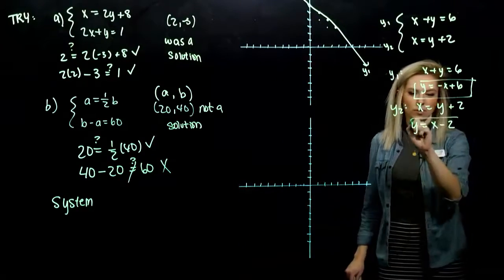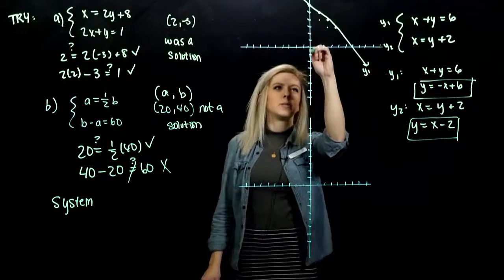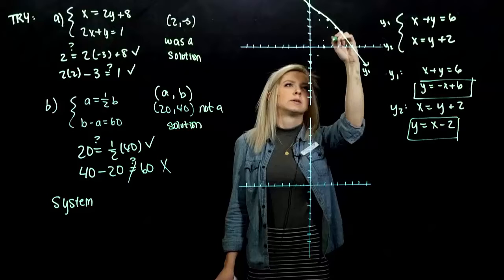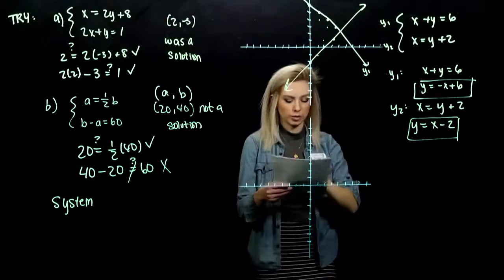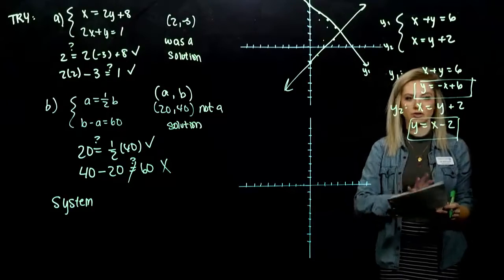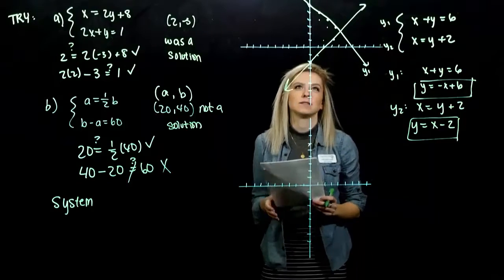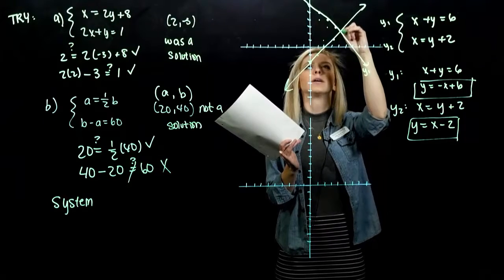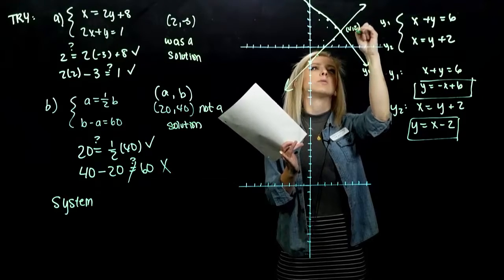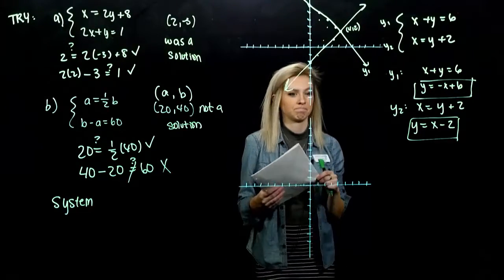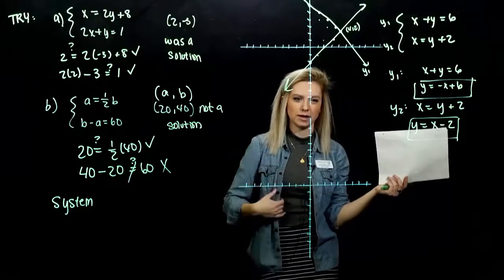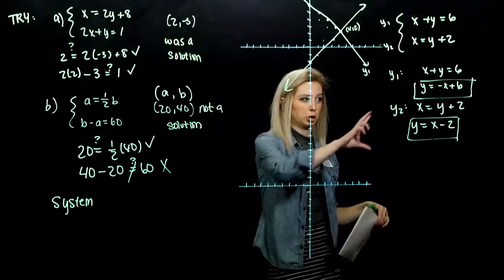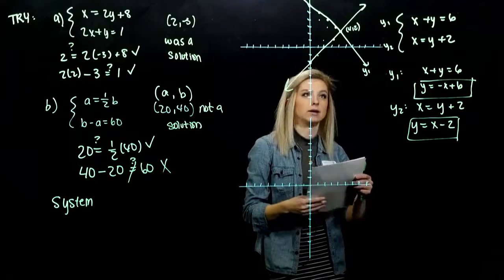And the second one, where is its y-intercept happening at? (0,-2). And from there we move according to the slope: up 1, over 1, up 1, over 1. So with your coordinate planes, the grids, get out a straight edge. We want the most accurate representation of these lines as possible. So where are they intersecting? At what point? So I'm looking at 1, 2, 3, 4, up 2. (4,2) is a solution to this system.